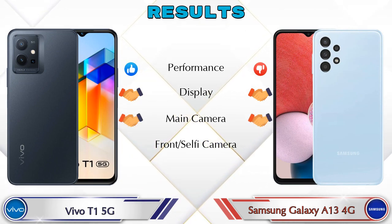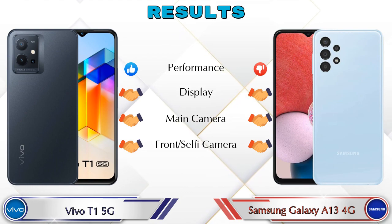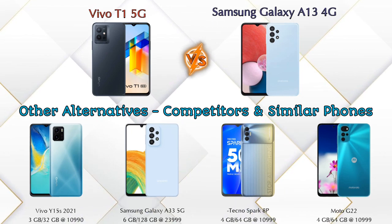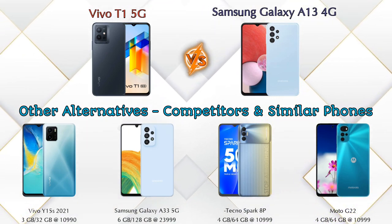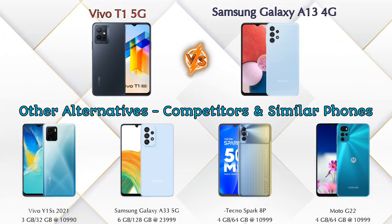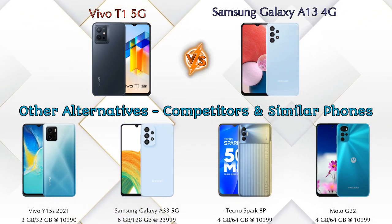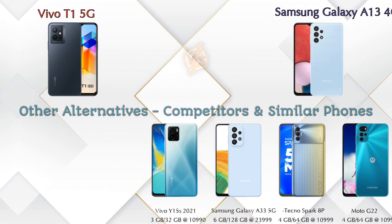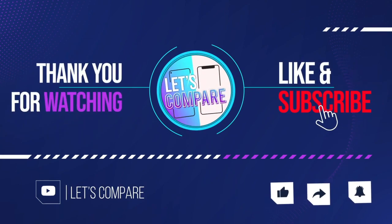For the final result: in performance, the T1 5G is ahead; in display, both phones are the same; in main camera, both are the same; in front selfie camera, both are the same. Other competitors at the same price include the Vivo Y15s 2021, Samsung Galaxy A33 5G, Tecno Spark 8 Pro, and Moto G22 4G. Details about all competitor phones are in the description. If you liked the video, please like and subscribe — thanks for watching.